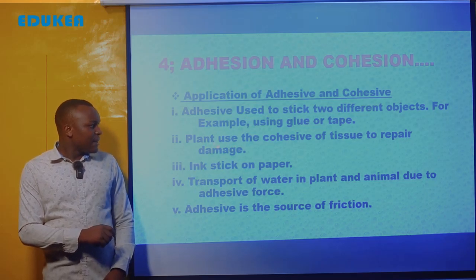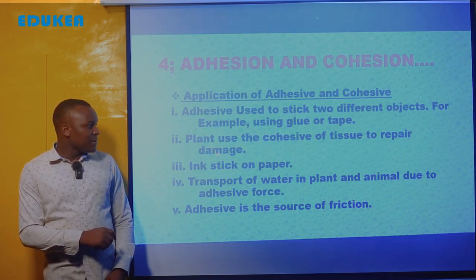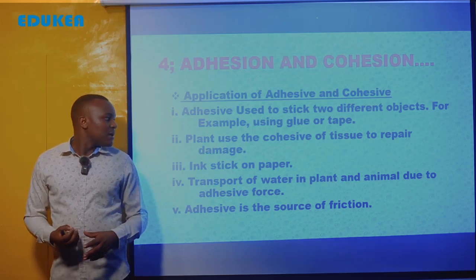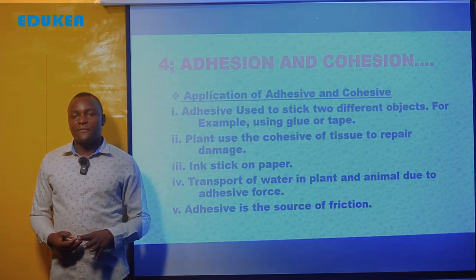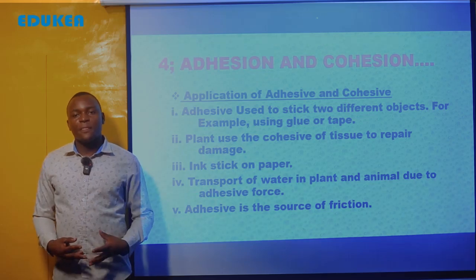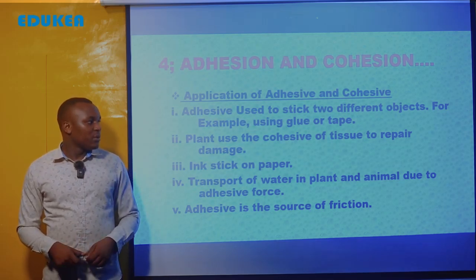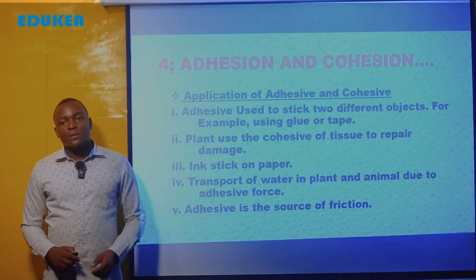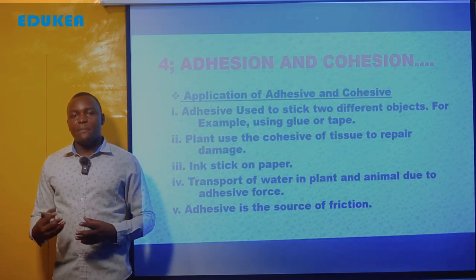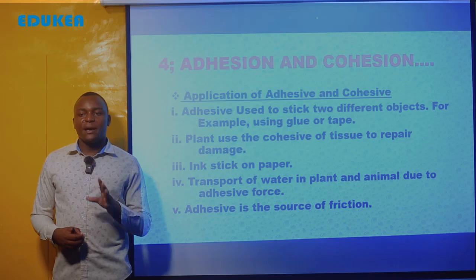Also, plants use cohesive force of tissue to repair damage. What enables plants to recover their lost tissue? It is due to the cohesive force — the force existing between molecules of the same kind. Within the molecules of the same kind, we talk about plant tissues. Cohesive force helps plants carry out tissue repair, so that when a plant loses some tissue, it can recover and return to its original state.